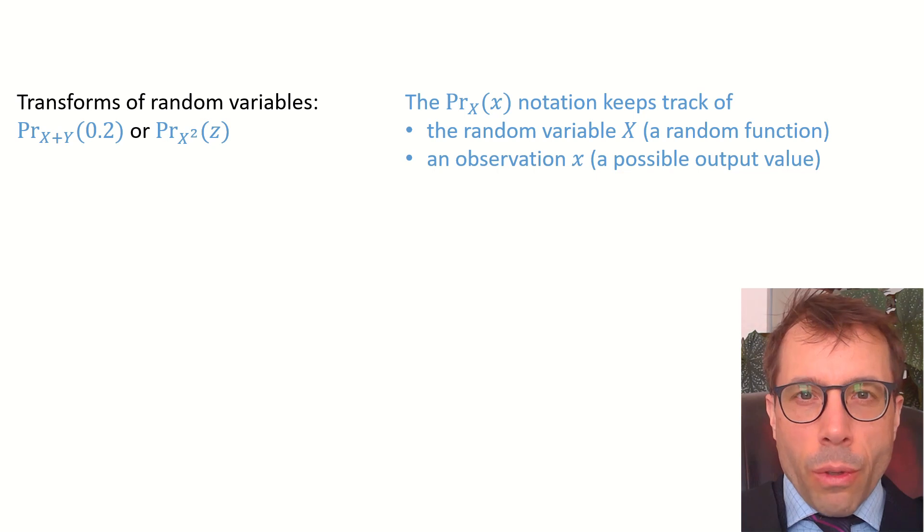It's tremendously useful to keep track of both of them in our notation for when we build up more and more complicated probability models. Like, look at those on the left. The first one says, what's the chance of getting the answer 0.2 when I call the random number generator big X and the random number generator big Y and add their outputs together? It's an awful lot of ideas packed into one dense little piece of notation, enough to make a mathematician rub their hands with glee.